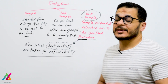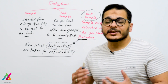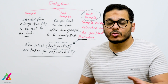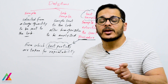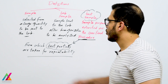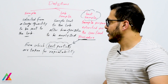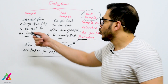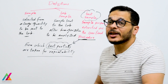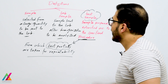A sample is collected from the field and should be representative of the analyte based on the requirements of the guideline used. It is selected from a large quantity — for example, a composite sample — to be sent to the lab.